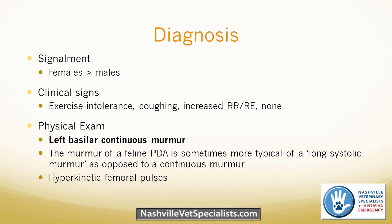On physical exam, you hear a left basilar continuous murmur — the classic washing machine murmur that is diagnostic for a PDA. Very few things can cause that kind of murmur, so if you hear a continuous murmur loudest at the left base of the heart, it's a PDA until proven otherwise. It's important to get up under their left arm to listen at the base of the heart to hear that continuous component.